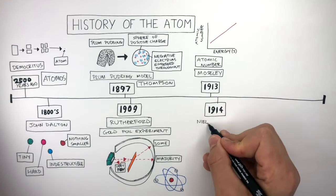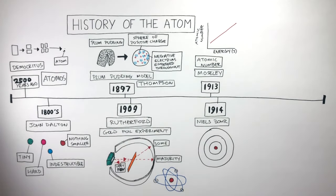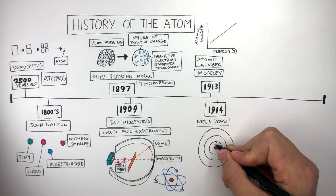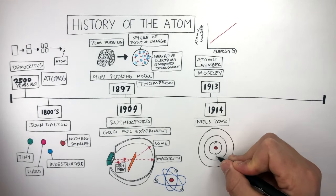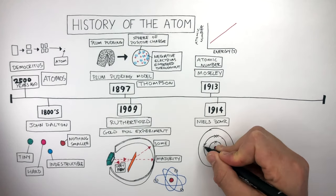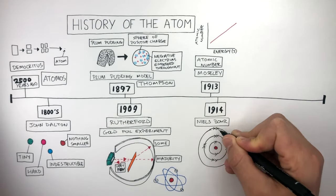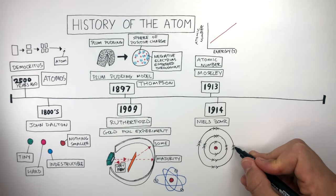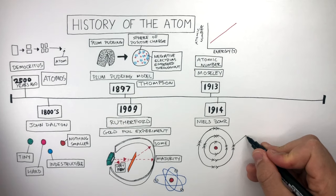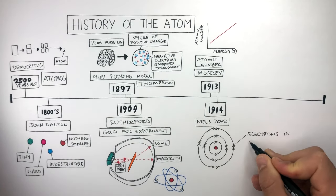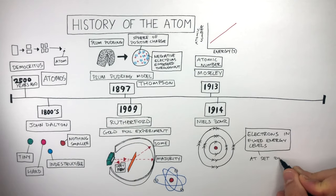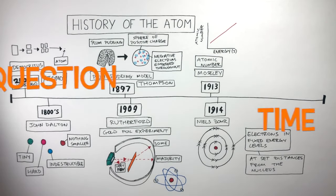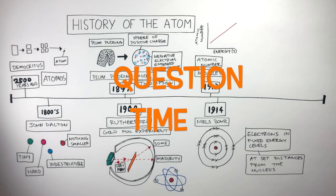In 1914 Niels Bohr came up with the atomic model which we know of today. He said there are two electrons orbiting the first shell, eight electrons orbiting the second shell, and another eight electrons orbiting the third shell. He improved Rutherford's model of the atom by saying electrons are in fixed energy levels at set distances from the nucleus. It's question time. Attempt these questions to check your understanding.